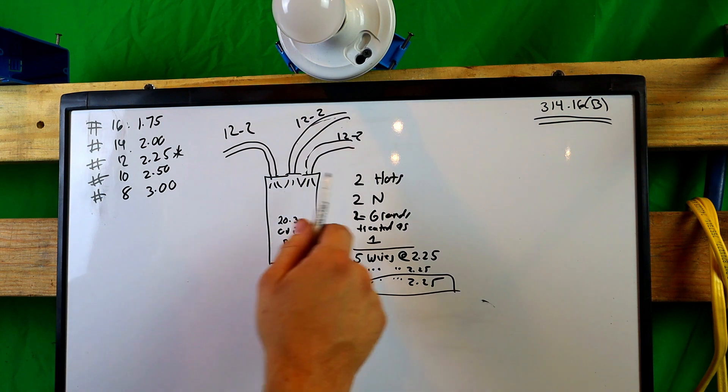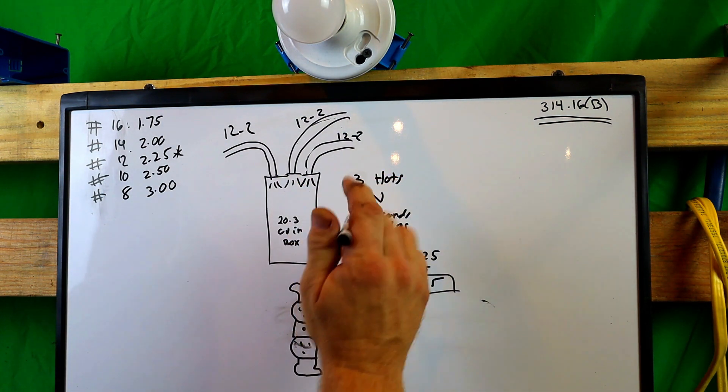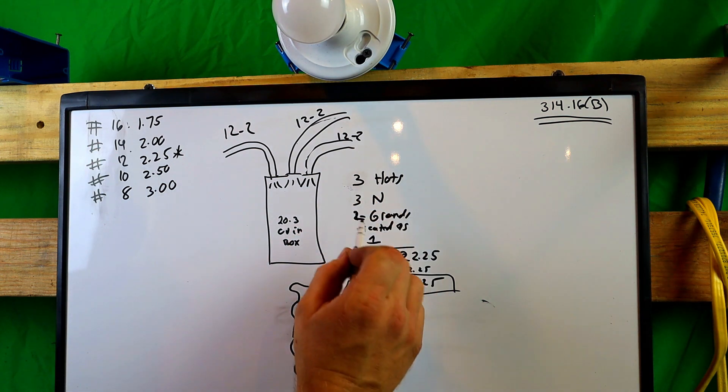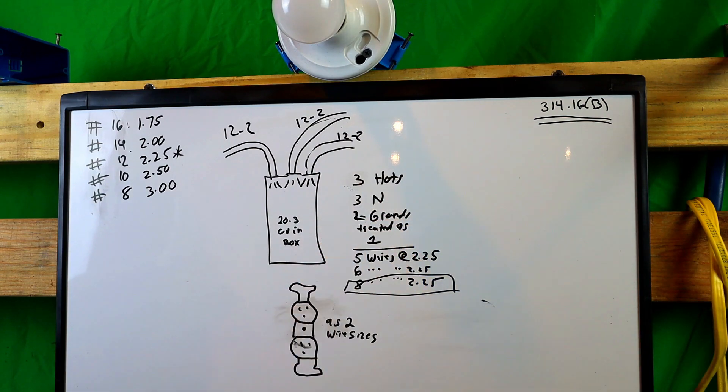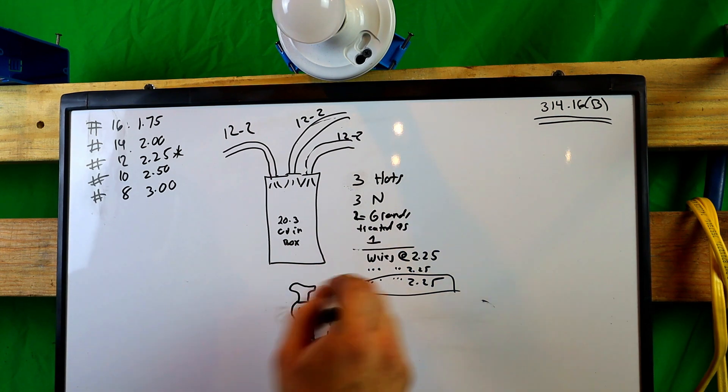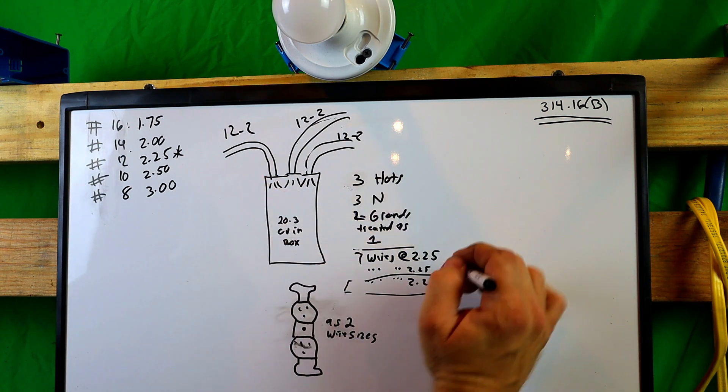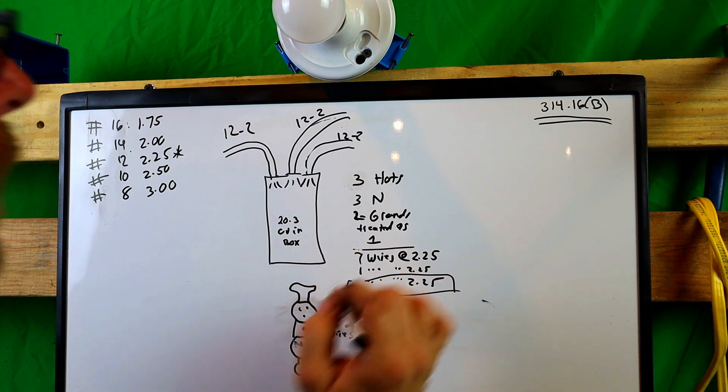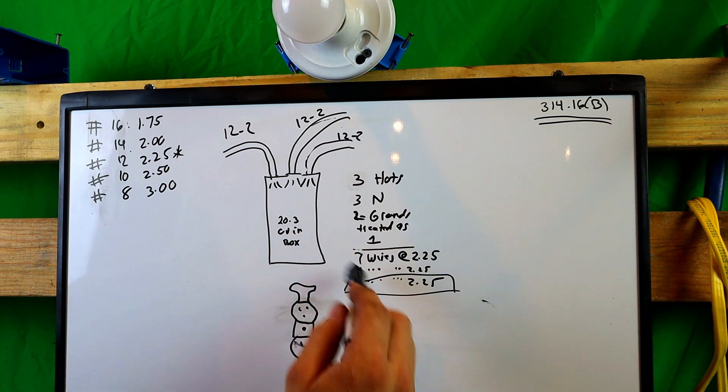Three hots and three neutrals. And we have another ground, but we're only counting that ground as one. So we still have three, three, and one. Alright. So let's change this around to change these wires out. So now we have three, six, seven wires total. We still have our internal clamps as one. And we have the device as two more. So now what do we have? Seven, eight, nine, ten.